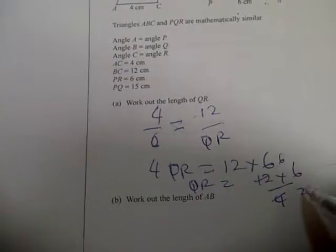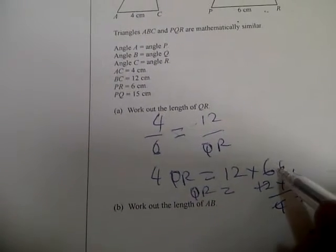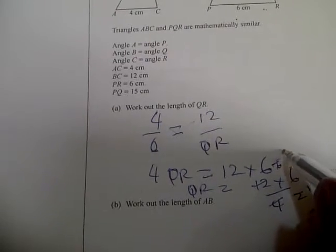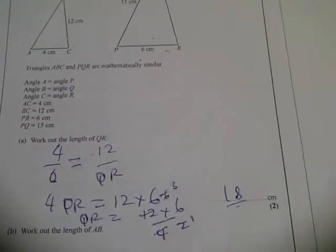2 into this is 2, 2 into this is 6, 2 into this is 1, 2 into this is 3. So 3 times 6 is 18 centimeters. That's it for question number 18a.